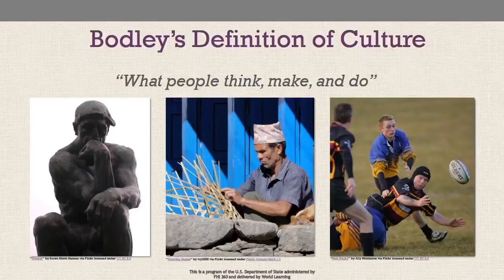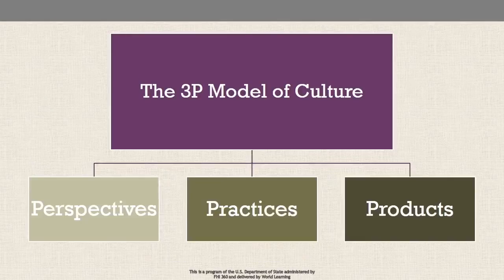Anthropologist John H. Bodley defined culture as what people think, make, and do. This broad definition has been developed in further detail by what is called the 3P model of culture. The 3Ps are perspectives, practices, and products. Let us look at each of these.